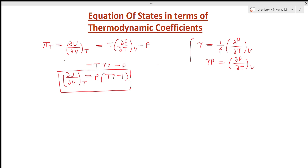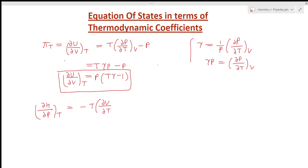Now the second equation of state: (∂H/∂P) at constant temperature is equal to minus T(∂V/∂T) at constant pressure, plus volume. In this expression we have (∂V/∂T) at constant pressure, which represents the change of volume with temperature at constant pressure, and this appears in the definition of alpha.